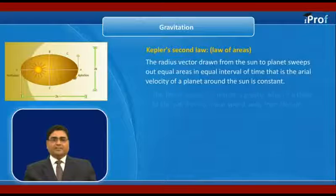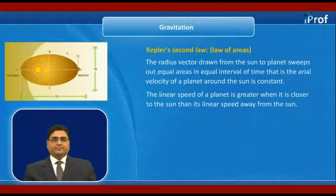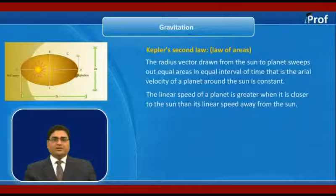The linear speed of a planet is greater when it is closer to the Sun than its linear speed when away from the Sun.